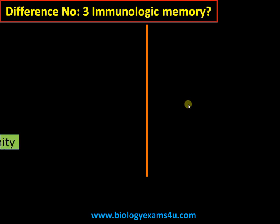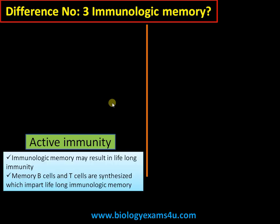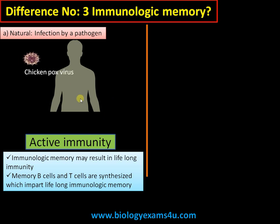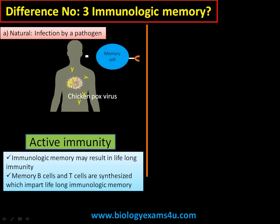Difference number three is regarding immunologic memory — a typical property of the humoral immune response. Immunologic memory may result in lifelong immunity. Once the pathogen is inside the body, the body synthesizes antibodies against it. Apart from antibodies, a set of cells called memory cells — memory B cells and memory T cells — are also produced. These cells remain in the body for a long time, and when the same pathogen comes a second time, they recognize it very easily and mount an effective immune response to remove the pathogen quickly. This is called immunologic memory.